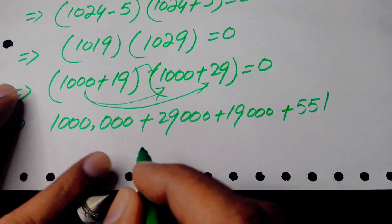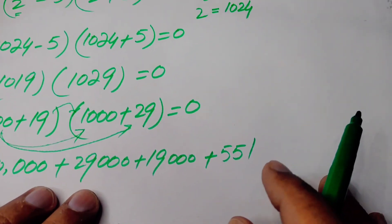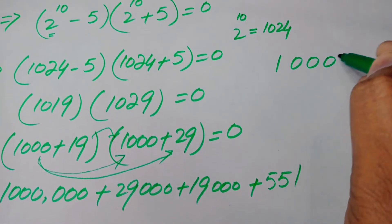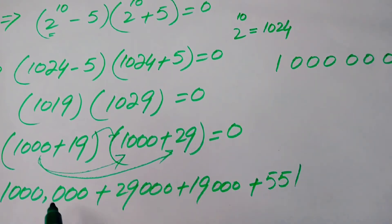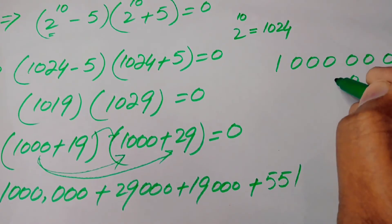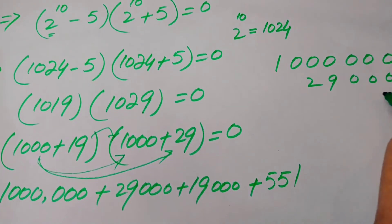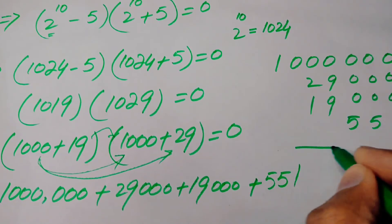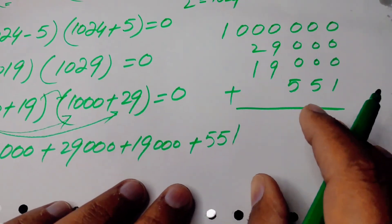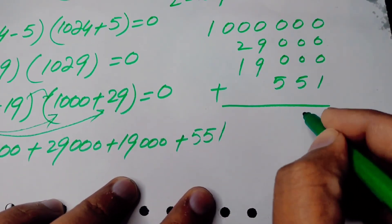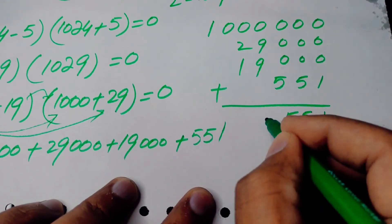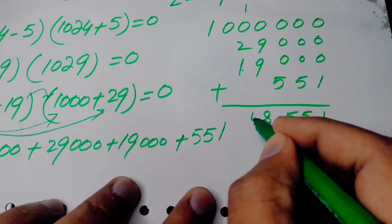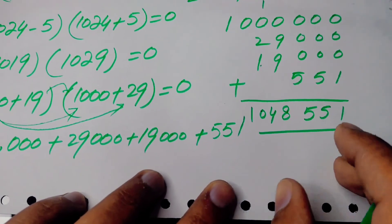We add all the terms together. When we add 9 plus 9 we get 18 with 1 carried over, then 1 plus 2 is 3, plus 1 carried is 4, giving us a 0 as well. So our final answer comes out to 1,048,551.